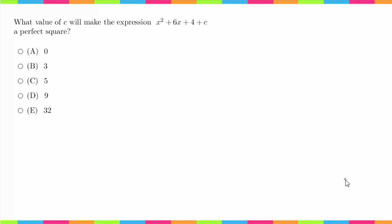Hey guys, welcome back. We are now working on question number 25 of the Mathematical Analysis Readiness Test. This question says: what value of C will make the expression x² + 6x + 4 + C a perfect square?